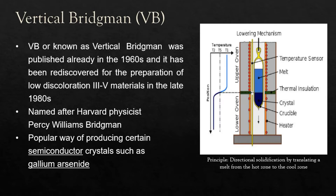The Bridgman furnace works with three temperature zones: the upper zone with temperature above the melting point, the lower zone with temperature below the melting point, and an adiabatic zone as a baffle between the two. The source material in the crucible must be fully melted in the hot zone and brought into contact with the seed at the bottom. Part of the seed is remelted to provide a fresh interface for crystal growth. The crucible is then translated slowly into the cooler section; once completely translated, the entire melt converts to a solid single-crystalline ingot.